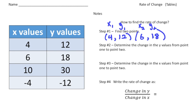Step two: determine the change in the y-values from point 1 to point 2. Our second y-value is 18 and our first y-value is 12, so 18 minus 12 gives a change of 6. Step three: determine the change in the x-values. Point 2's x-value is 6 and point 1's x-value is 4.